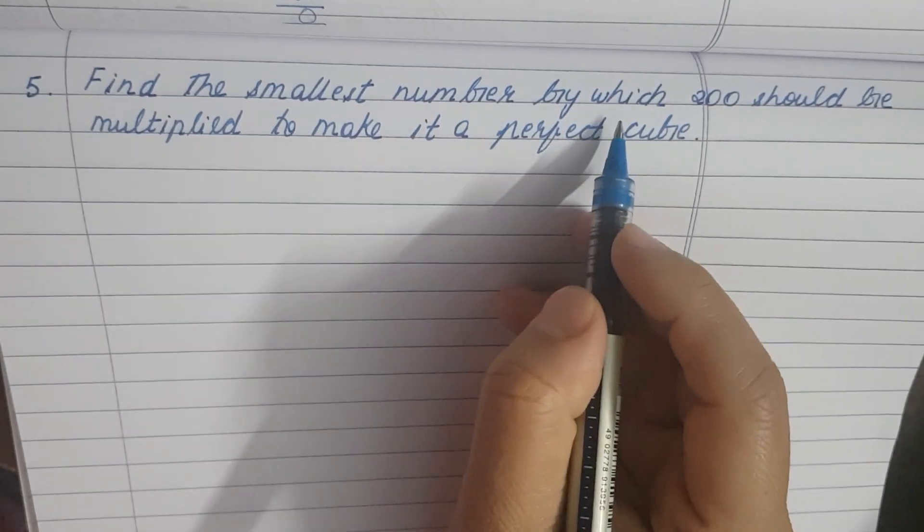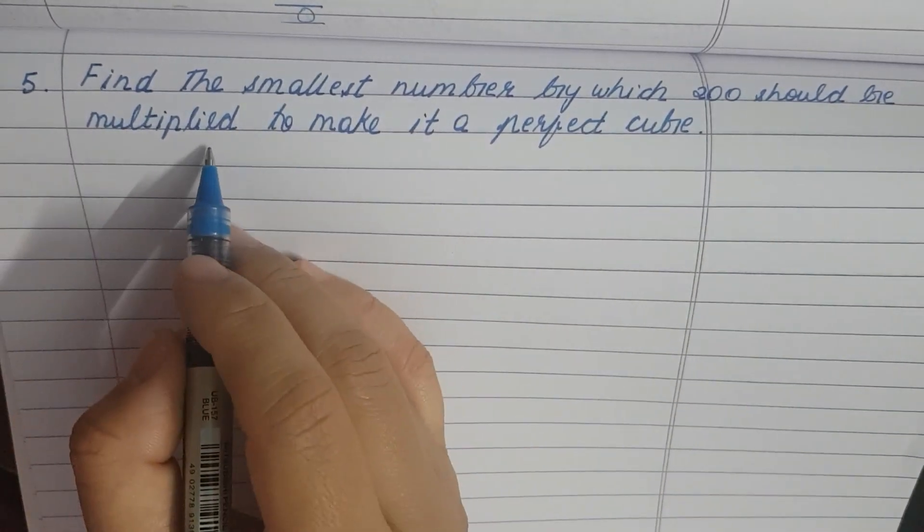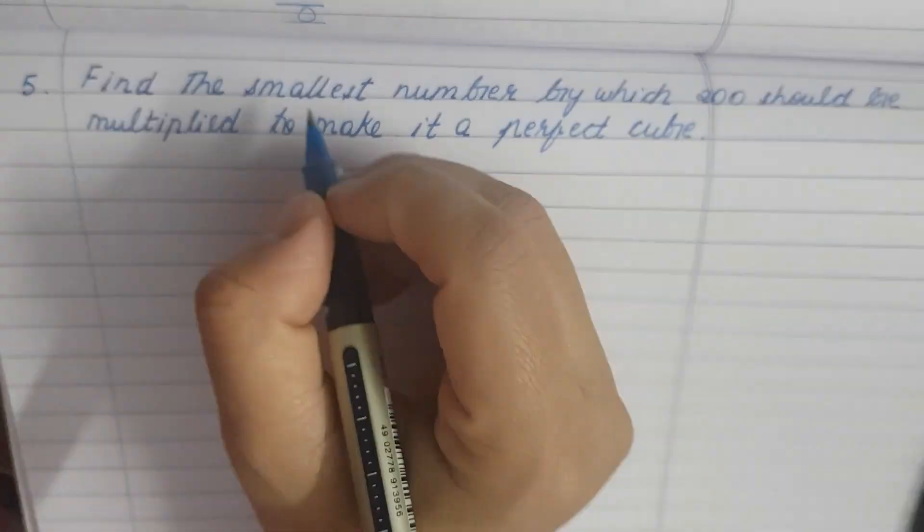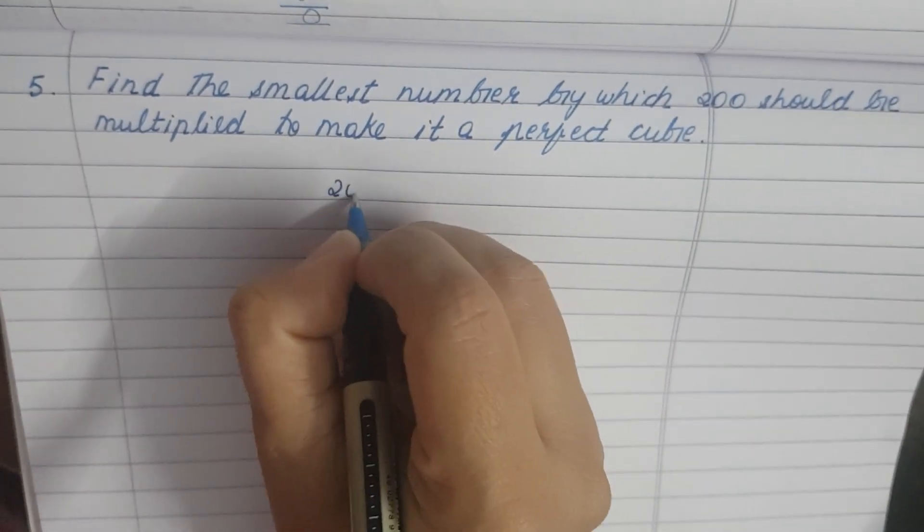Find the smallest number by which 200 should be multiplied to make it a perfect cube. We will do first prime factorization.